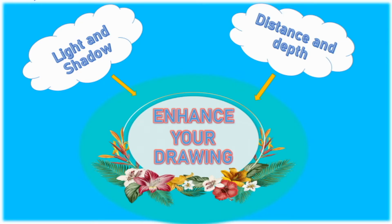For this unit we have two learning contents. The first one is light and shadow, and the second one is distance and depth. After discussing Unit 4, you should be able to describe the characteristics of paintings with the arranging of distance, depth, weight, and light and shadow.